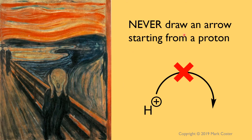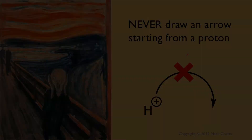Rule number five: never draw an arrow starting from a proton. A proton is simply a hydrogen nucleus — H+ is just a proton with no neutrons and no electrons around it. If there are no electrons around it, and curved arrows signify the movement of electrons, we cannot start a curved arrow from an H+ or a proton.